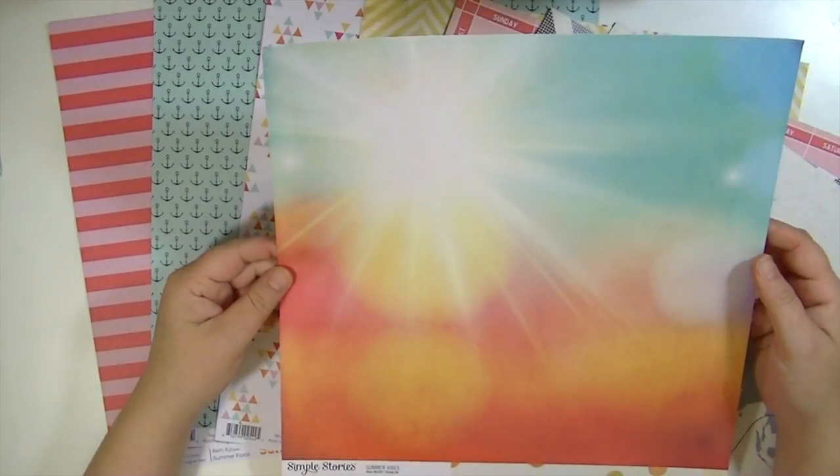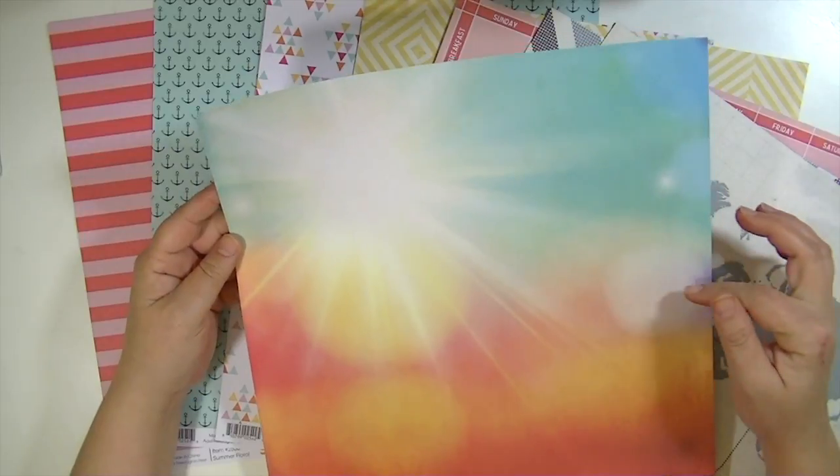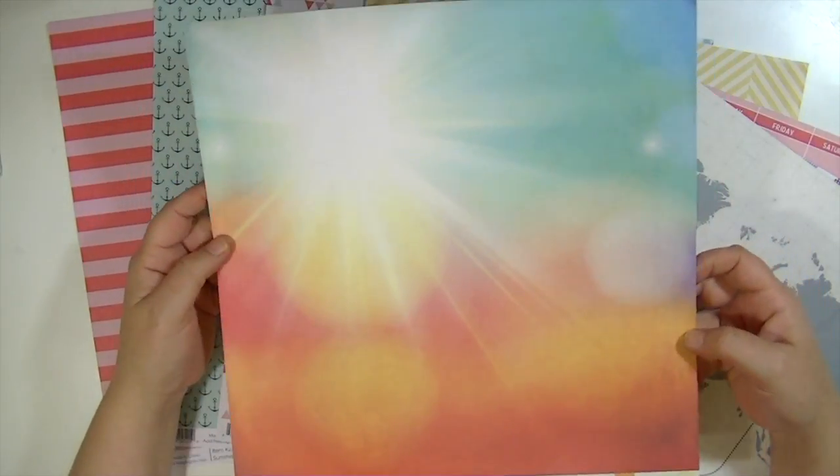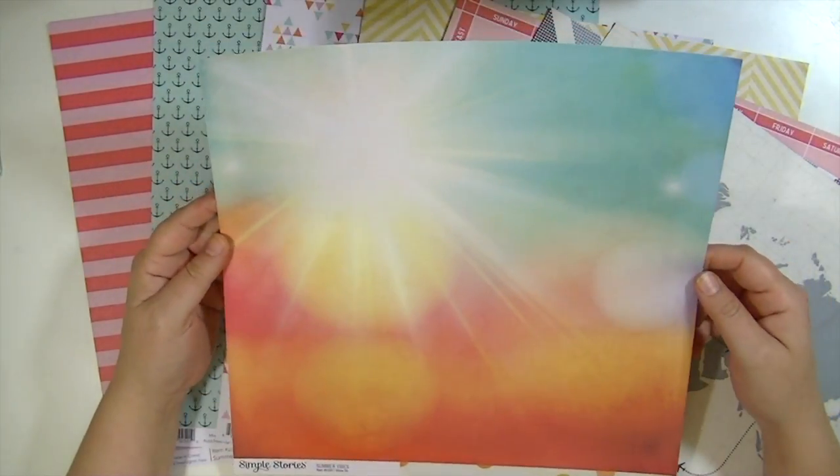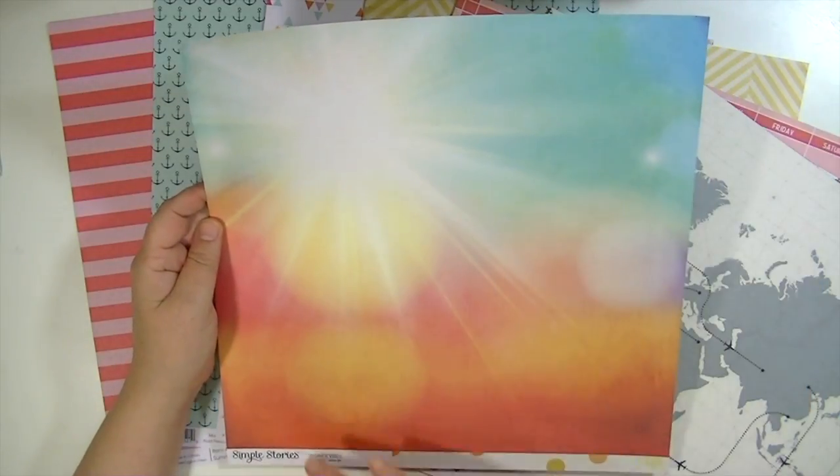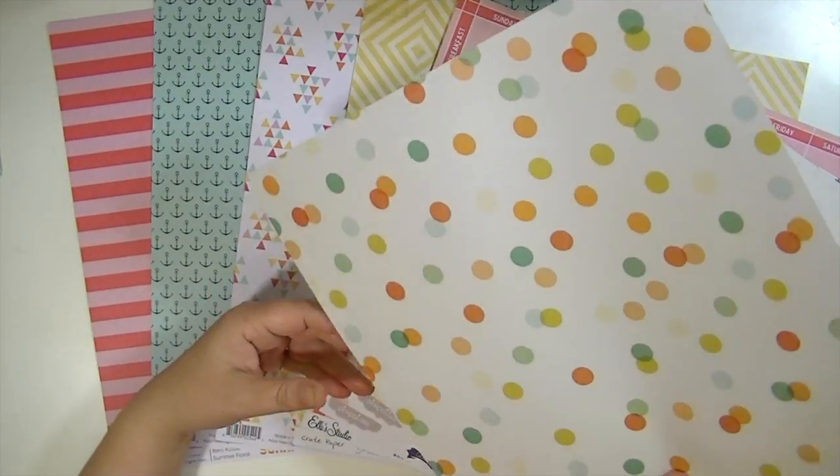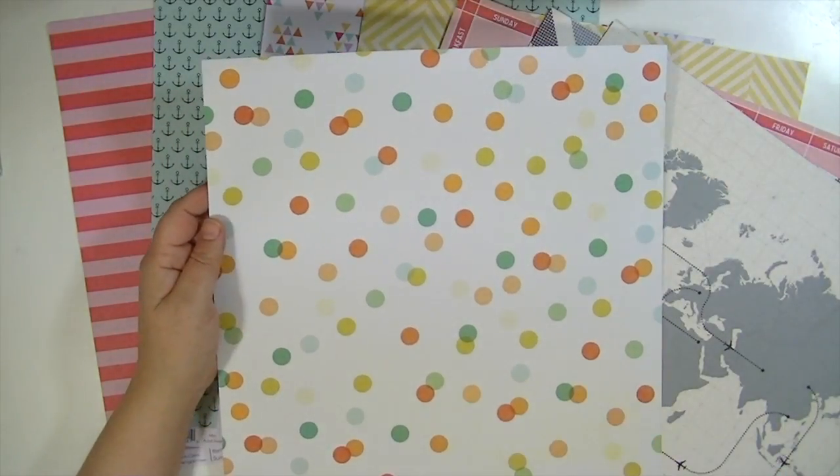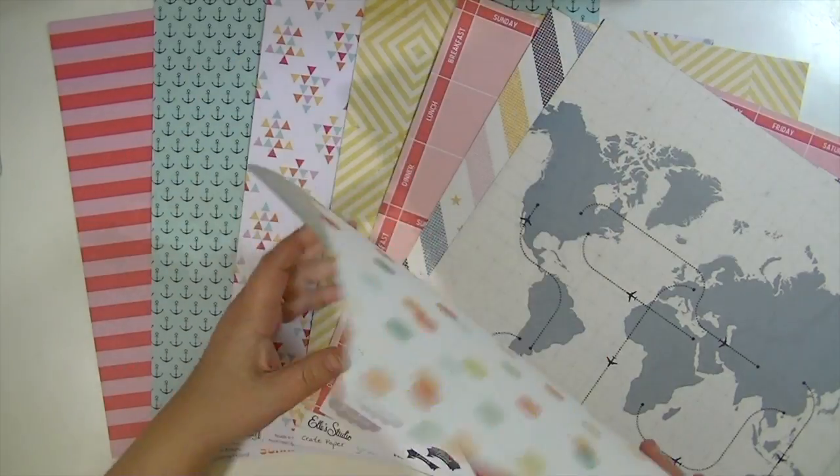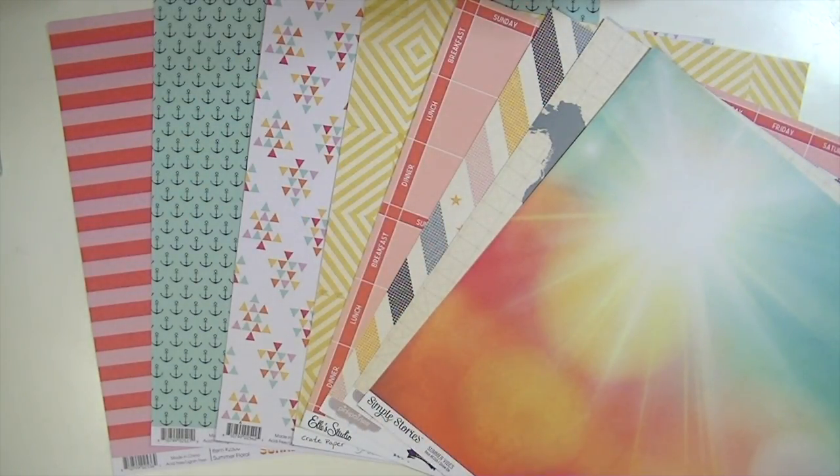This is from Simple Stories called Summer Vibes, and this paper is pretty much the reason why I got the patterned paper add-on because I just love it. I can just see myself using it as a background and then wanting more to cut mats and stuff. But also because how gorgeous is this side? I just thought, yep, need to have both, be able to use both sides.